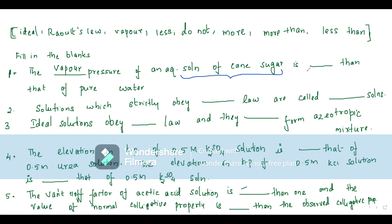The solution's vapor pressure is greater than or lesser than the solvent's vapor pressure? We have studied that when you add a solute into a solvent, the vapor pressure decreases. That is why the boiling point increases.